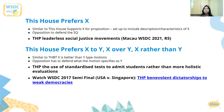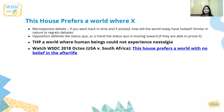One thing to remember is that overall these motions operate from a current perspective or context. That's in contrast to 'this house prefers a world where x,' which is retrospective and quite similar in nature to a 'this house regrets' debate. So if you went back in time and x existed, how would the world today have looked? Opposition once again has to defend the status quo, or a trend the status quo is moving towards, if they're able to prove that this is a trend the status quo is moving towards.